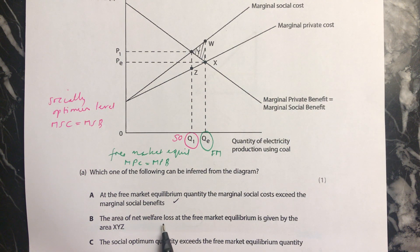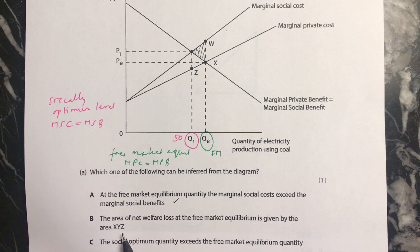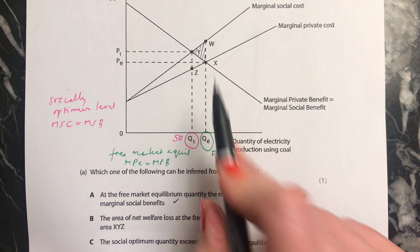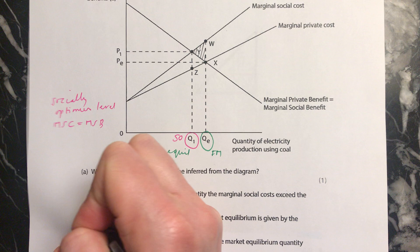B says: the area of net welfare loss at the free market equilibrium is given by the area XYZ. That's wrong. XYZ is this area here — that's nothing. So that's not true.